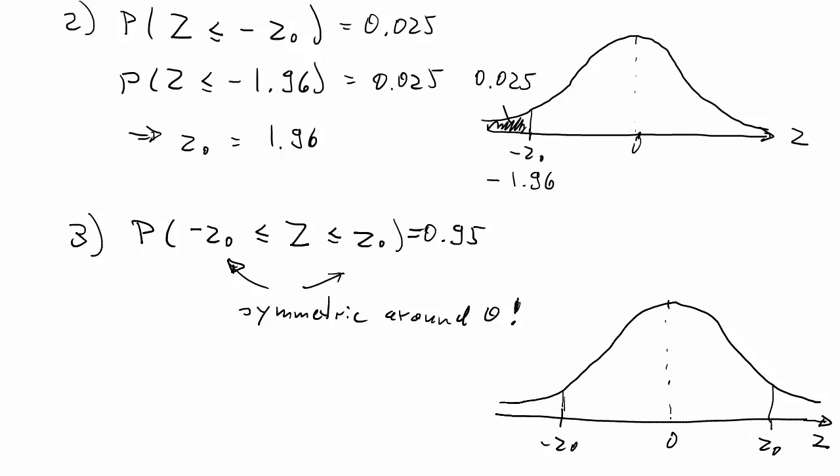And we know that the probability to land between these two values is 95%. So that leaves us with two little bits. This bit and this bit.